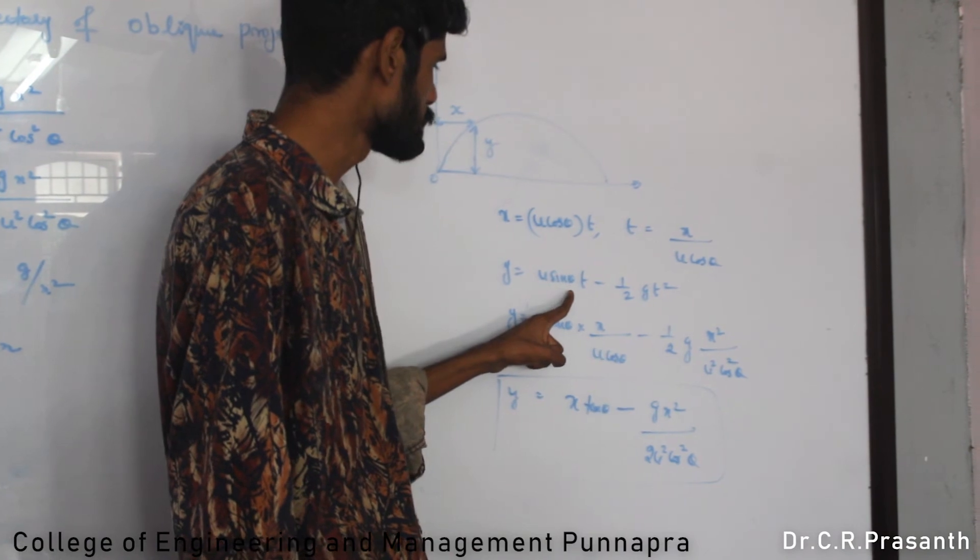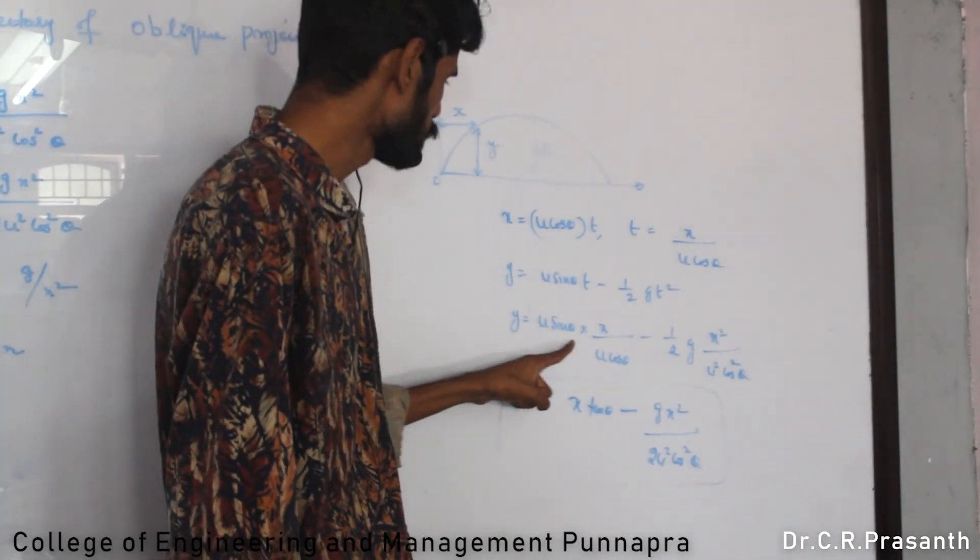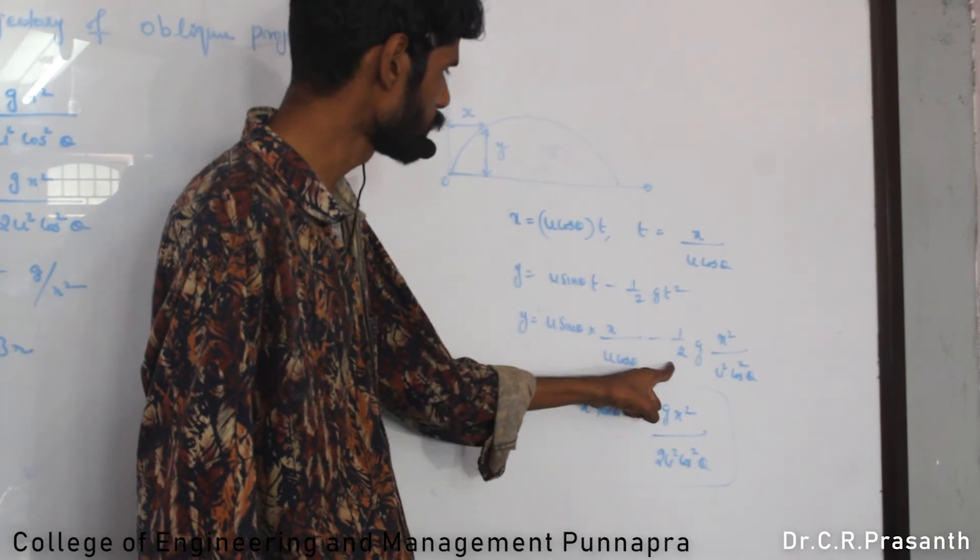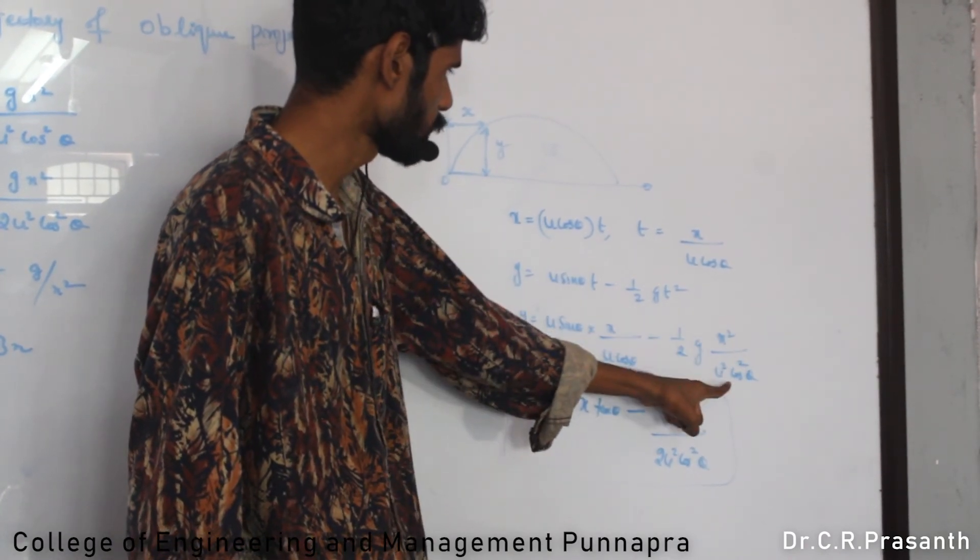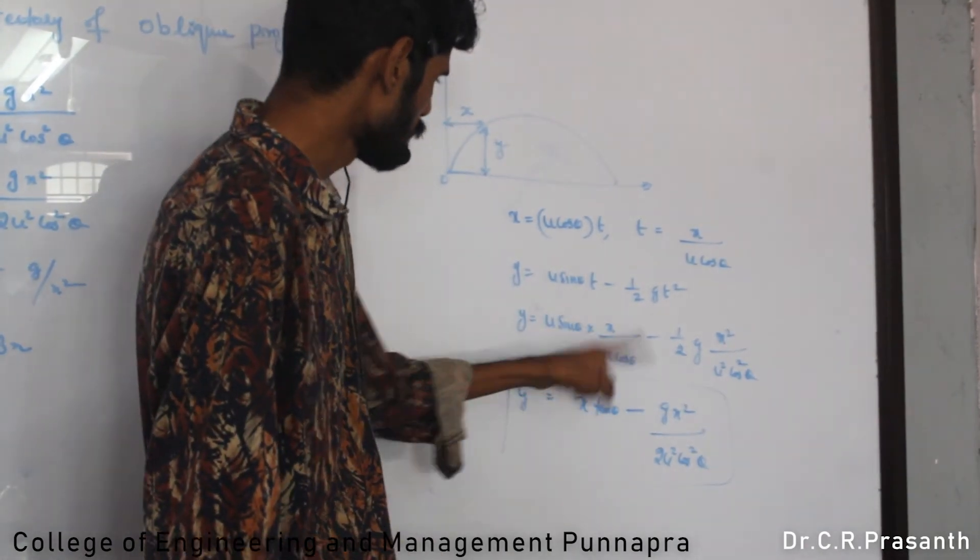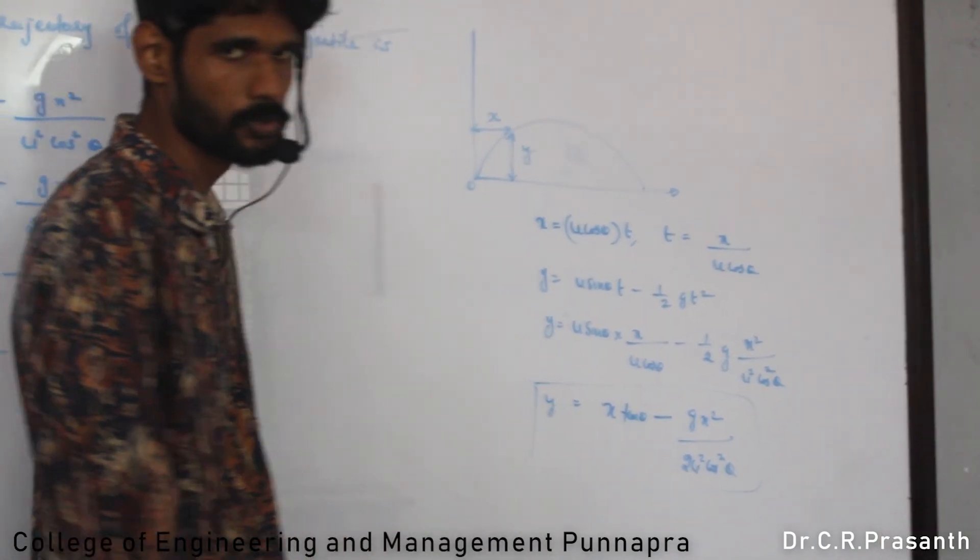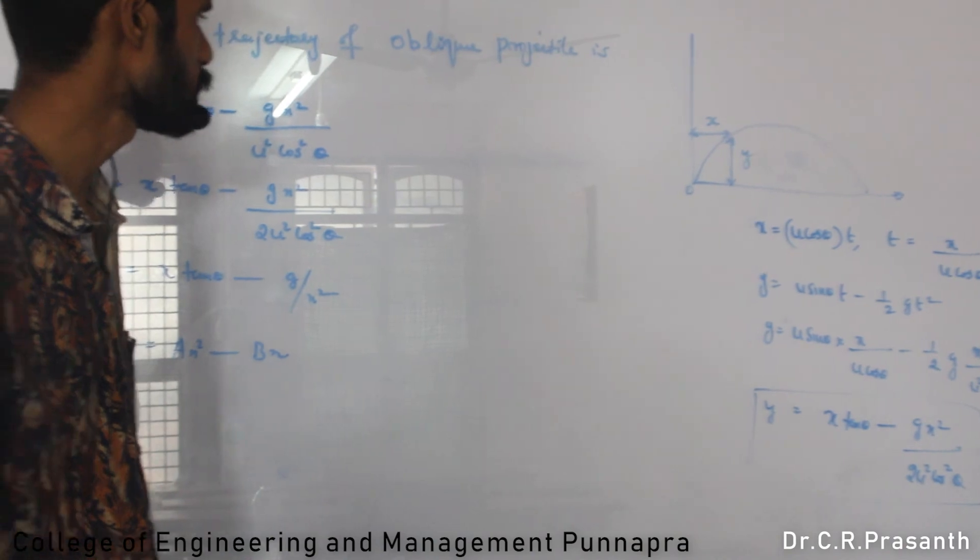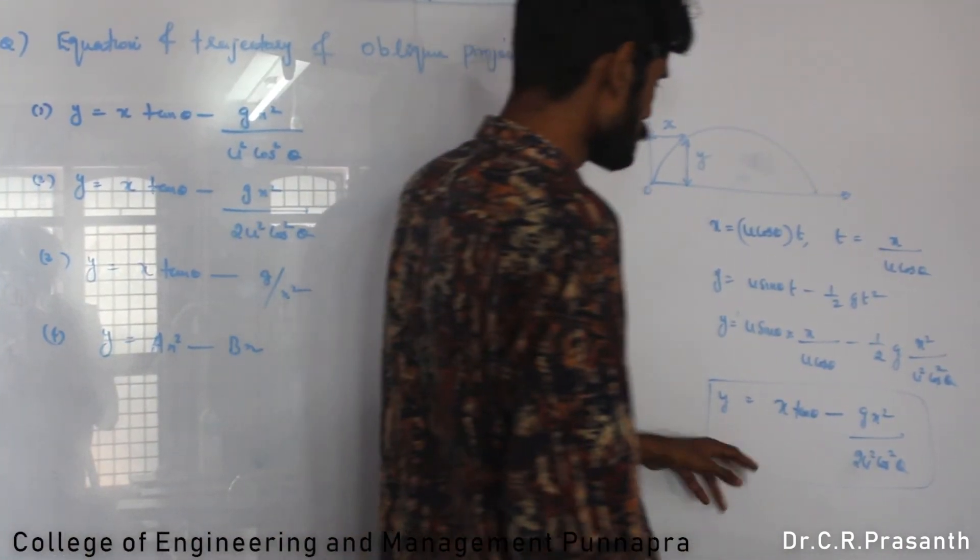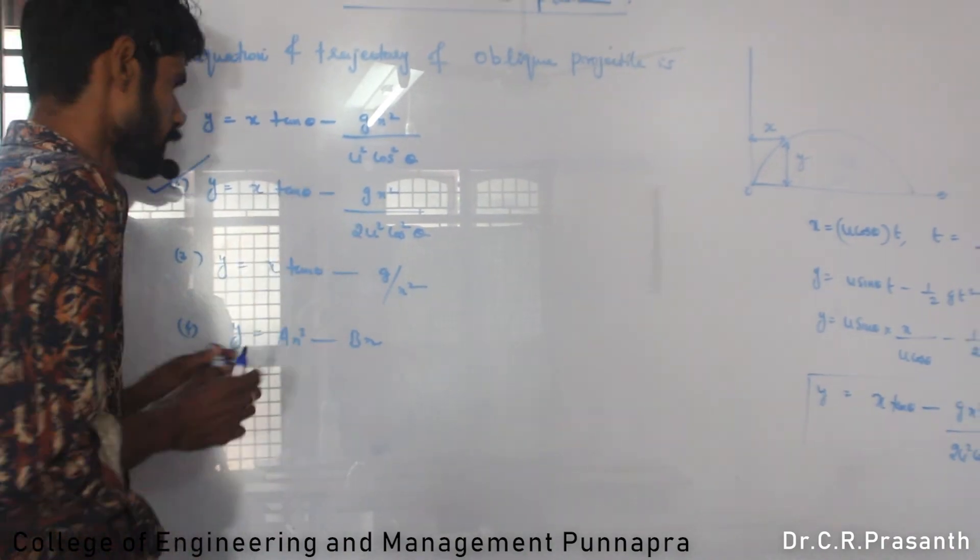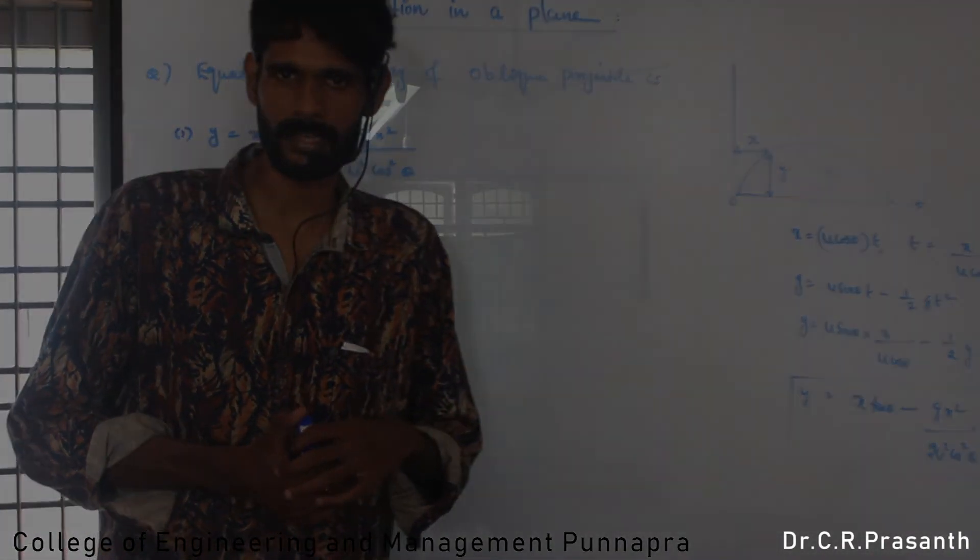In vertical direction, y equals u sin theta t minus half g t squared. Substituting t equals x by u cos theta: y equals u sin theta times x by u cos theta minus half g times x squared by u squared cos squared theta. The equation of trajectory is y equals x tan theta minus g x squared by 2 u squared cos squared theta.